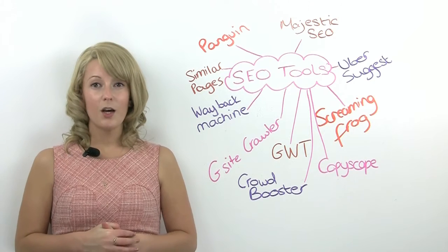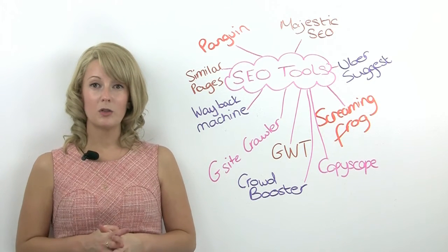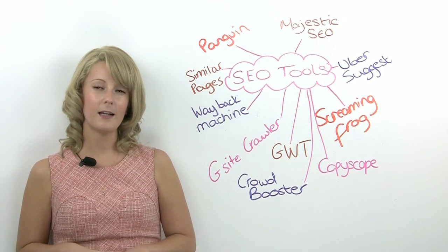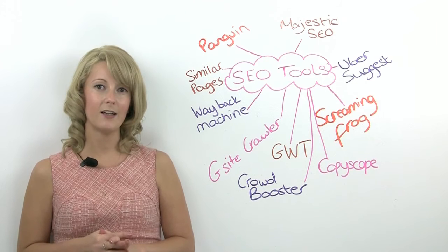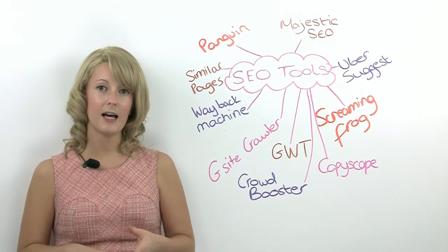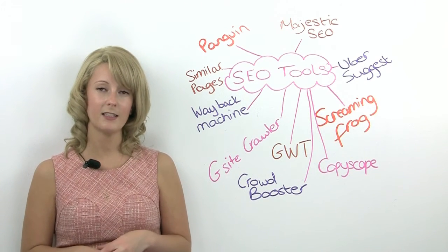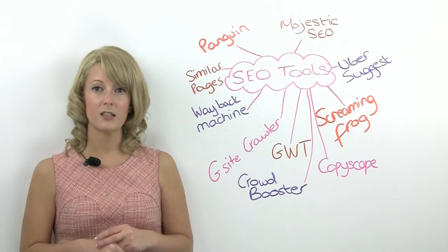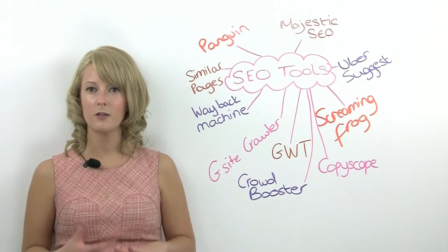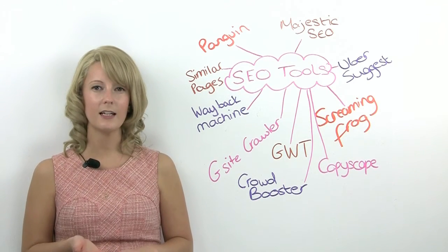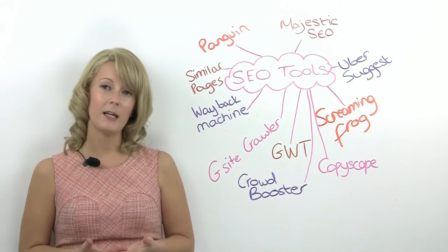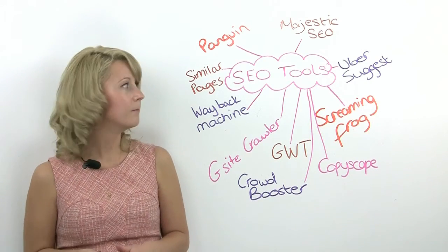Majestic SEO is something I use all the time for backlink analysis. In particular within Majestic I would pay attention to your IP analysis and your anchor text. This can show you if you've got an unnatural balance of brand and non-brand anchor text, and within your IPs whether you've got too many links from one IP.